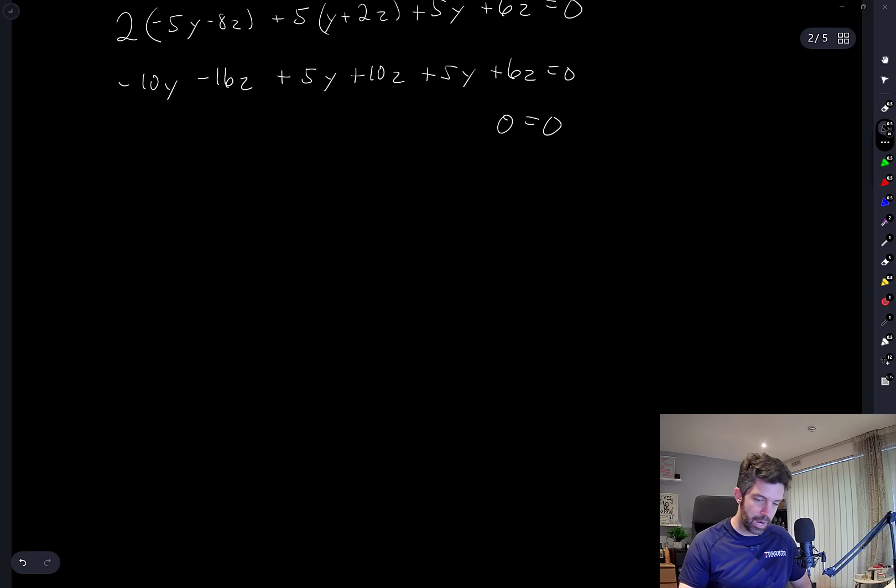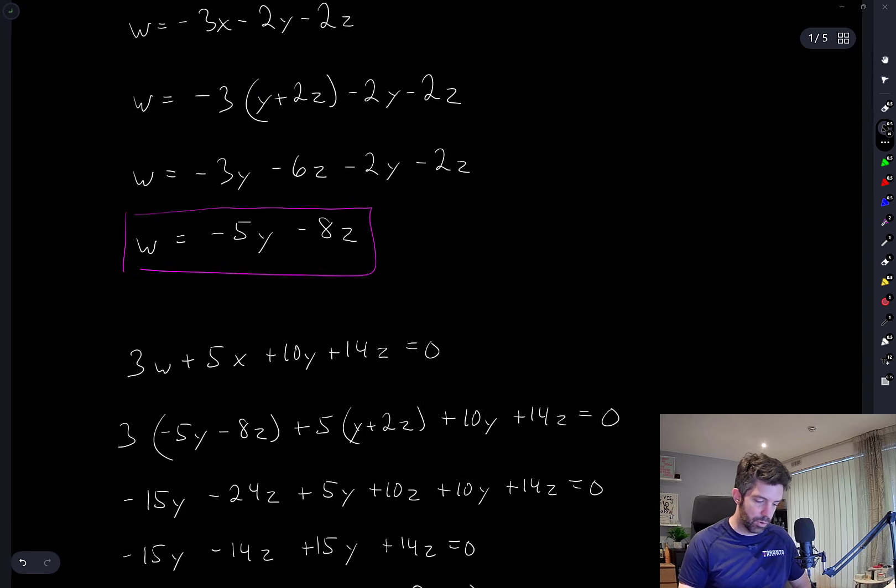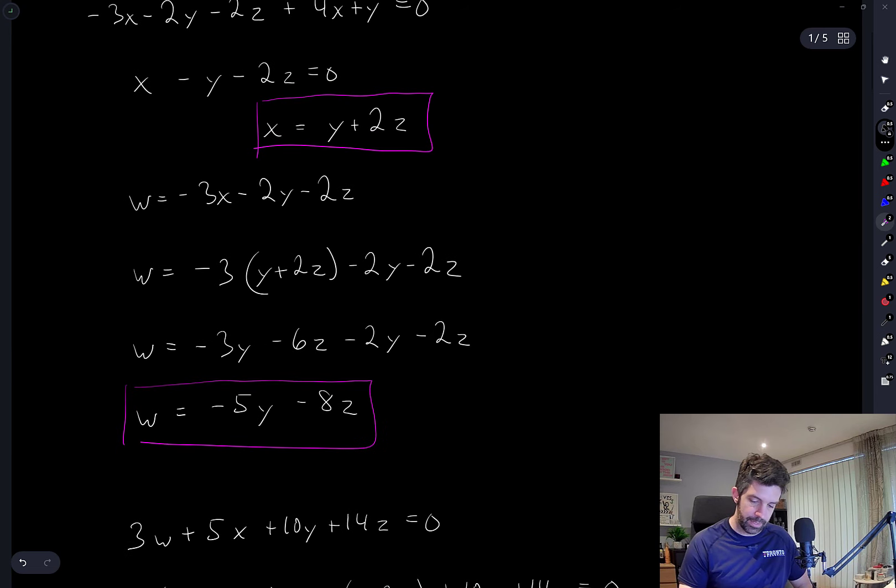So if we want to write out the entire solution, because I've already written W and X in terms of the variables Y and Z, what I'm going to do is I'm going to introduce what I'll call free variables. I'll call them S and T. And we will parametrize everything in terms of S and T.